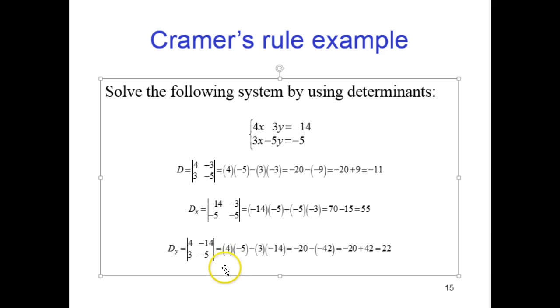And we do our multiplication here, 4 times negative 5, minus the product of these two, 3 and negative 14. So it's 4 times negative 5 minus 3 times negative 14 equals negative 20 minus negative 42, which equals negative 20 plus 42, which equals 22.